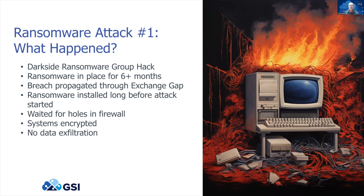For six months, the malware was in the system continually trying to ping its home base and failing. Then the second support company took a firewall update and failed to put back the rules that had been in place before. Port 3389 happened to be a hole that was opened up. The software that had been waiting six months now had a way through the firewall, reported back to home, and the Dark Side group did their thing. They encrypted the data, but there was no significant data exfiltration — their bookkeeping software wasn't of much interest.